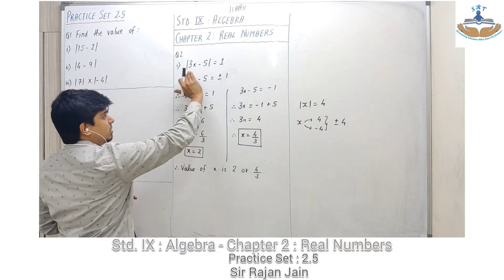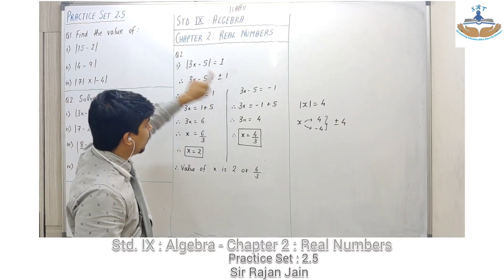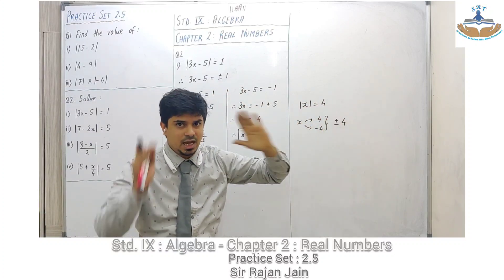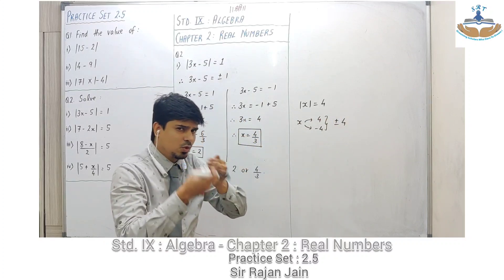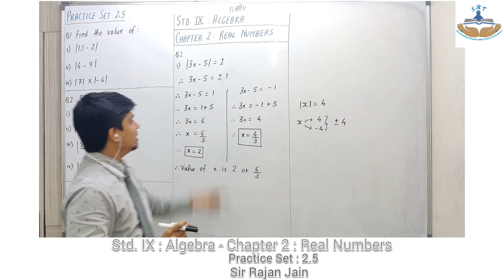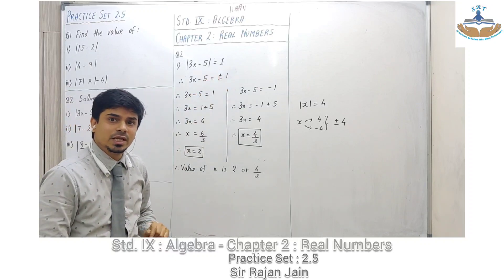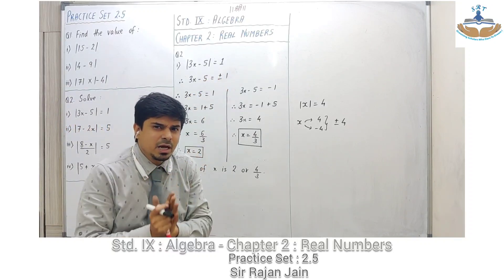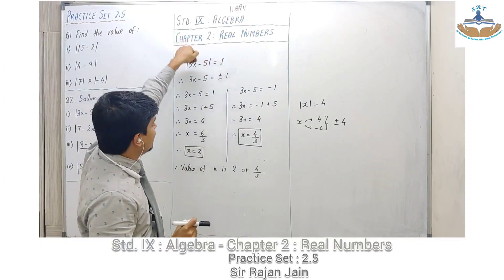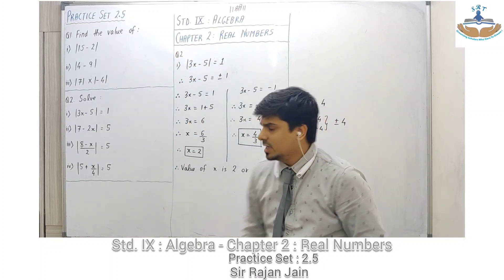Whenever you are removing the mod sign, on the right-hand side you take plus or minus. We take two cases because, as shown in the example with mod of x equal to 4, x can be plus 4 or minus 4. If there is confusion, rewind and listen to that example again carefully. That is why we take one case with a positive sign and one with a negative sign.